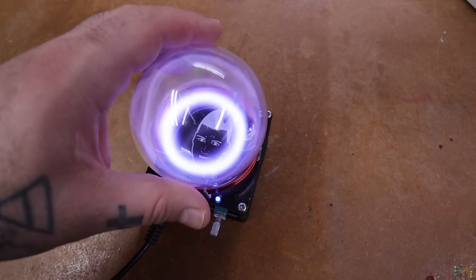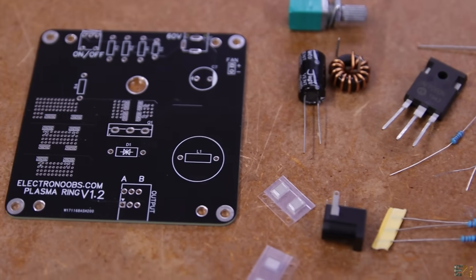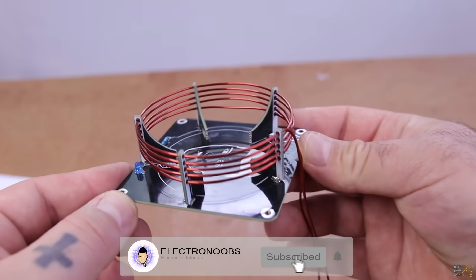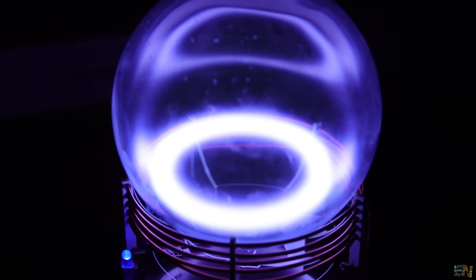We will see just that in today's episode, where I build the required circuit, make the PCB and create my own plasma toroid inside of a glass bowl. Check all the links below and consider supporting my work on Patreon. That being said, let's get started.